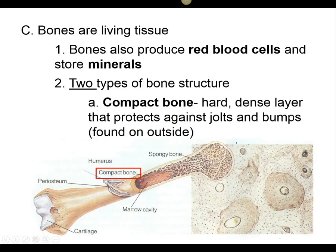Bones are alive. They literally have cells that produce products that can be excreted out, which actually make the hard part of the bone. Inside of our bones is where we make red blood cells — that's called our bone marrow. The outside, the hard part, is composed of two different types of bone.